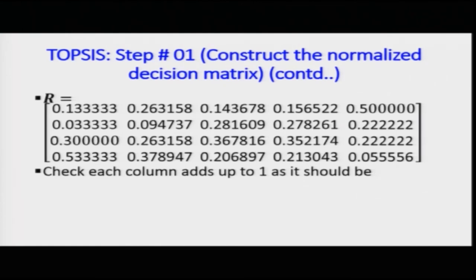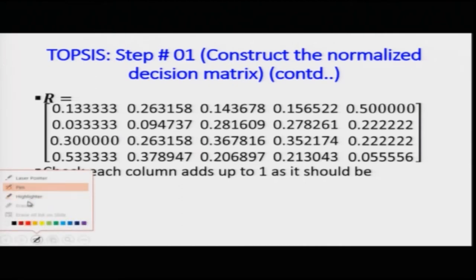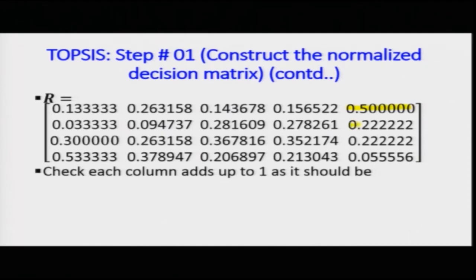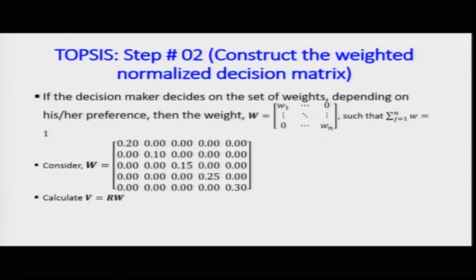Similarly, for the last column — the fifth criteria — the corresponding weightages accruing to alternatives one, two, three, and four are approximately fifty percent, twenty-two percent, twenty-two percent, and five percent respectively. This is the normalized matrix. Now the decision maker must decide on weights — the relative importance each criterion carries — so that values for each alternative are multiplied by the corresponding weights to produce a ranking.